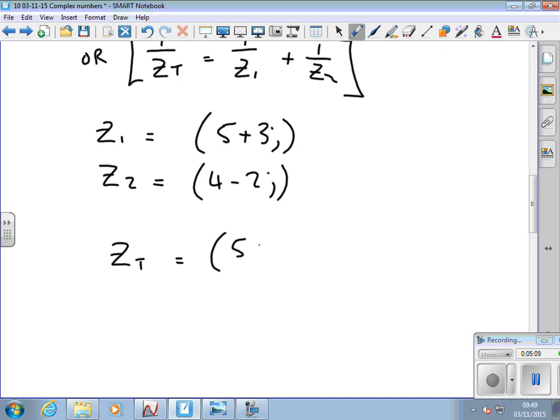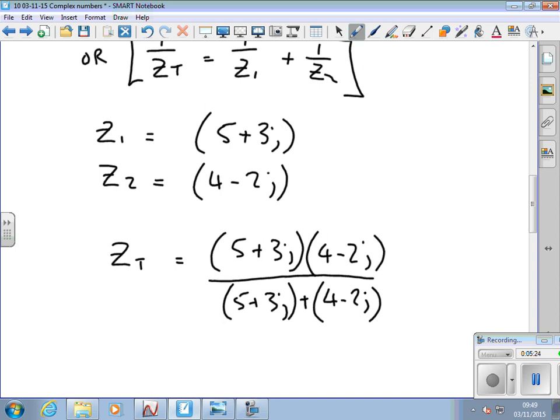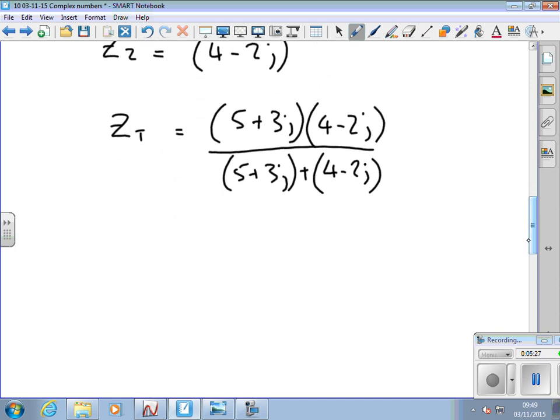So that's going to be equal to 5 plus 3j times 4 minus 2j over 5 plus 3j plus 4 minus 2j. So now I use the rules of complex numbers to work out what ZT is. I've got to multiply out these two brackets, multiply these complex numbers. I've got to add these two complex numbers, and then those two answers, I've got to divide one by the other. So I'll just pause this for a sec while you do it. You've got to do a multiplication, addition, and a division effectively to end up with ZT.